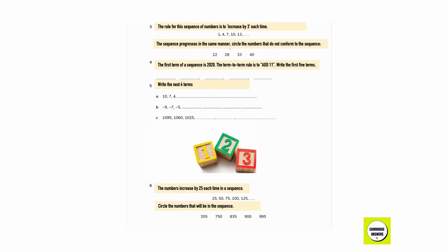Question number 3. The rule for a sequence of numbers is add 3 each time: 1, 4, 7, 10, 13.